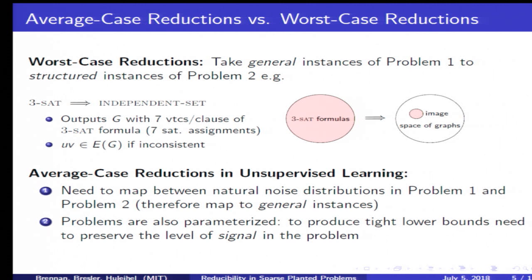If you have a problem like planted clique, which has a conjectured computational boundary at k equals square root of n, and a problem such as sparse PCA, which has a conjectured computational boundary at theta equals square root of k squared over n, you would want to map an instance of planted clique with parameters k and n to a parameter pack like theta, k, n with that exact correspondence of theta equals square root of k squared over n. In other words, mapping the boundaries faithfully.